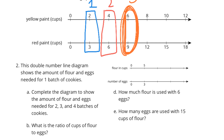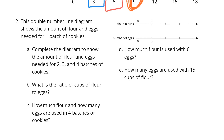Now the next question. This double number line diagram shows the amount of flour and eggs needed for 1 batch of cookies. Complete the diagram to show the amount of flour and eggs needed for 2, 3, and 4 batches of cookies. The flour is going up by 5: 5, 10, 15, 20. The eggs are going up by 3: 3, 6, 9, 12.